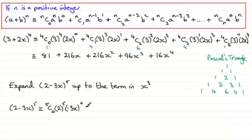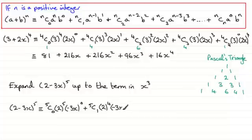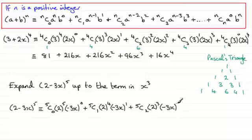The next term will be 5C1, then 2 to the power 4 — we reduce the power on the 2 by 1 — and then increase the power on (−3x) by 1, so it's now to the power 1. Then 5C2, 2 to the power 3, and increase this term by 1, so it's (−3x) now to the power 2. This is an x squared term; we've got to take it up to x cubed, so we need one more term.